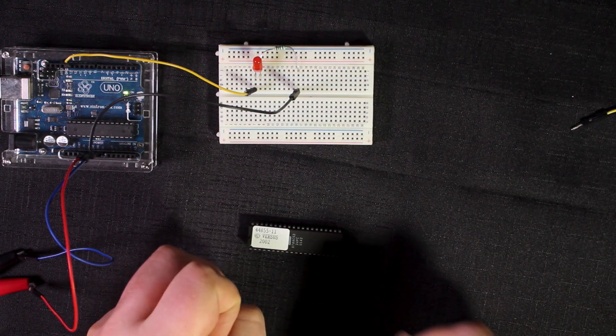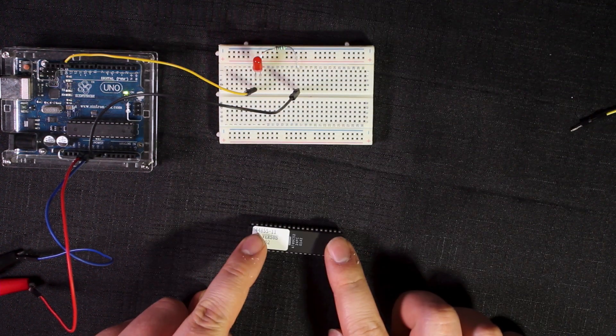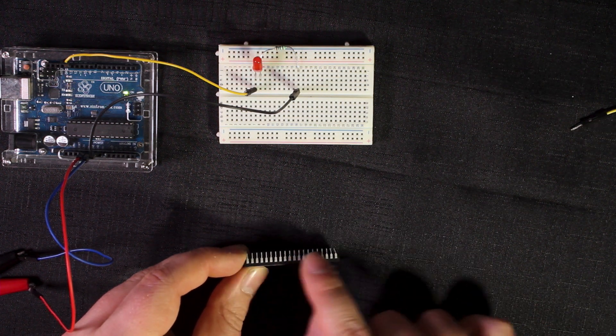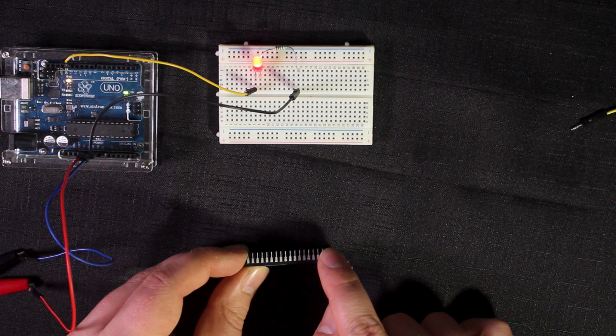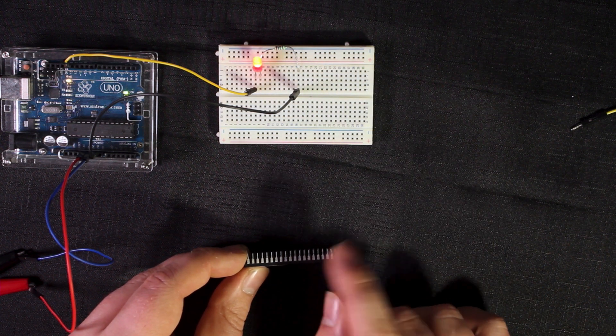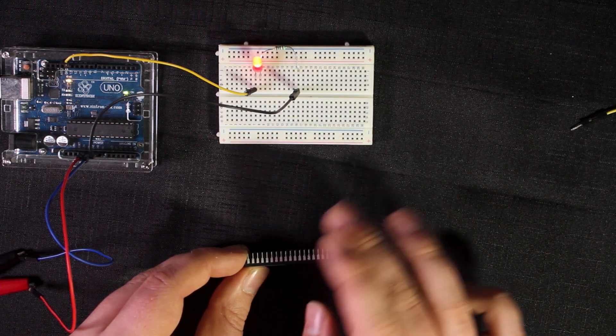A logic probe is normally used to test integrated circuits, and specifically if the pins on the circuits are high means there's voltage, low means there's no voltage, and in some logic probe cases pulse, which normally dictates that there's data passing through.